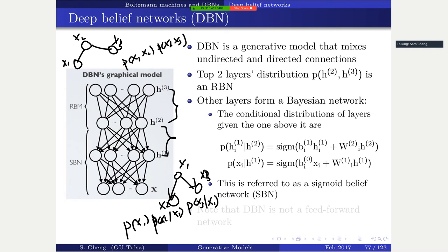In the directed graph portion, the conditional probability is modeled by a sigmoid function - similar to what we had in RBM. You have the hidden unit layer, apply a linear transformation with weight matrix W, weighted sum with current input, then pass through sigmoid activation. This particular form is called the sigmoid belief network.